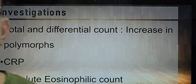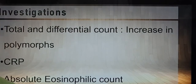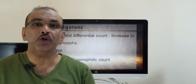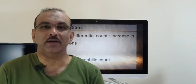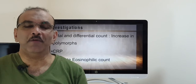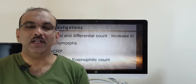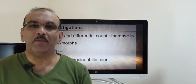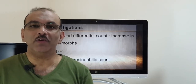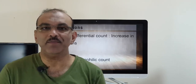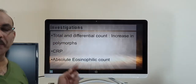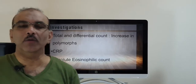Coming to the investigation — when you do a blood test, if you have an acute infection on top of a chronic rhinosinusitis, the cell count will be more and from that we can make out whether it is a bacterial or viral infection. When we do a C-reactive protein (CRP), the values will be high.